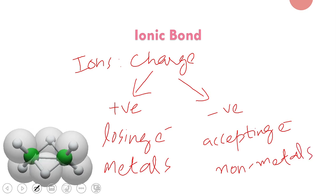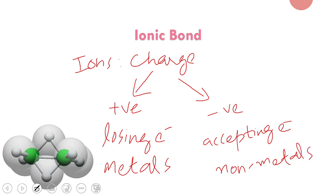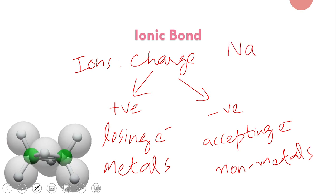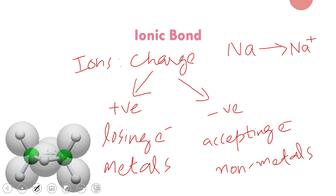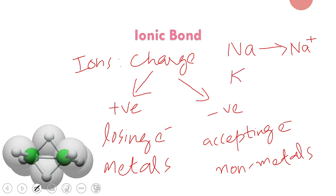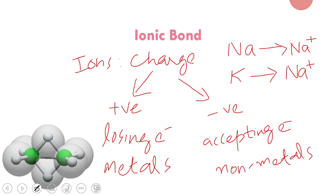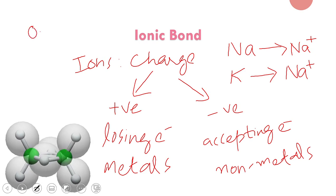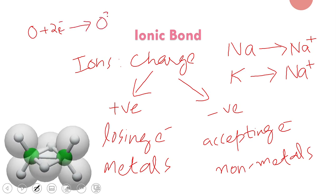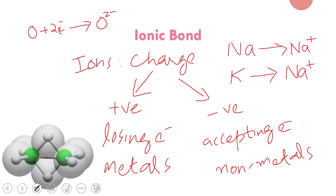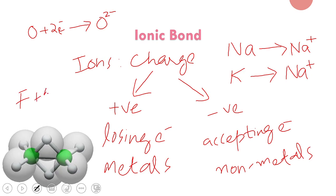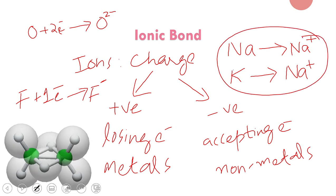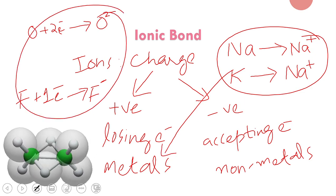In the periodic table, elements that form negatively charged species are called non-metals, and those that form positively charged species are called metals. For example, sodium loses an electron and forms a positive ion, so it is a metal. Similarly, potassium loses an electron and forms a positive ion. On the other hand, oxygen accepts two electrons and forms a di-negative ion — we call oxygen a non-metal. Fluorine accepts one electron and forms a negative ion — also a non-metal. So all positively charged species are metals and all negatively charged species are non-metals.